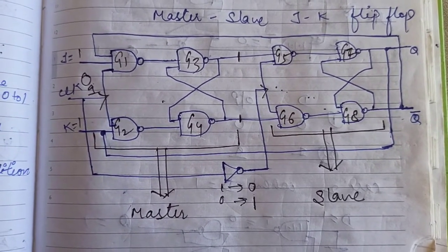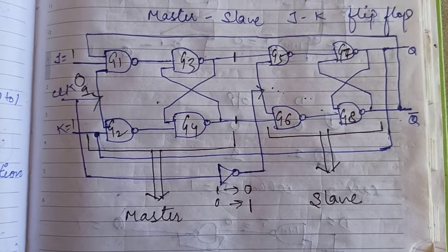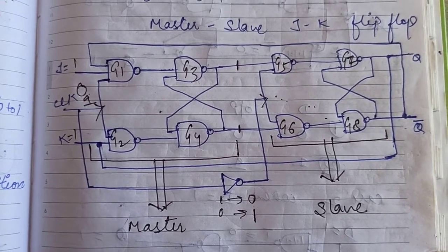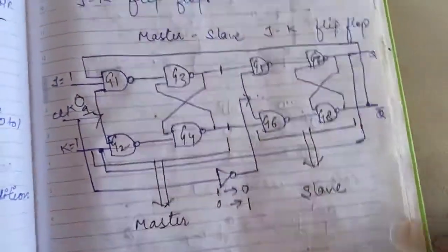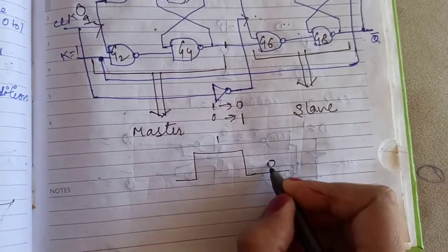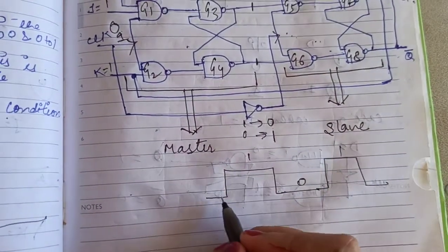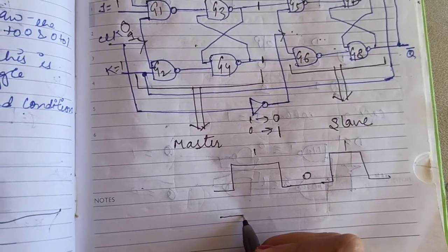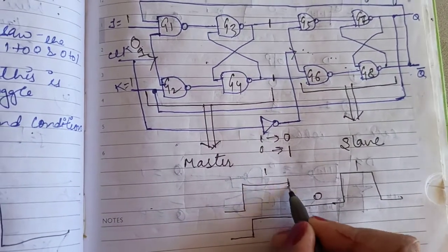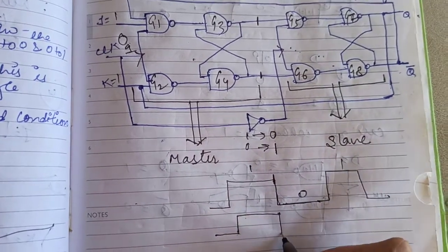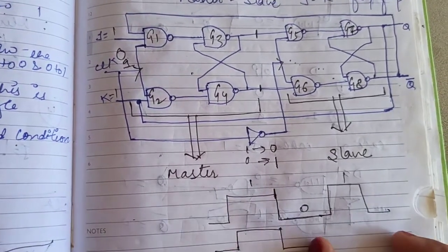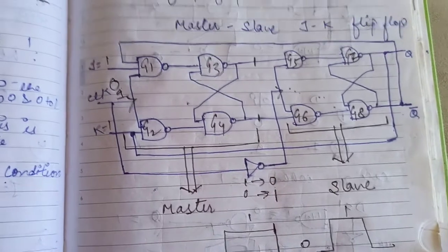When we give zero clock pulse to the master JK flip-flop, the master becomes inactive and the slave goes to the active state. You can see that when we give clock pulse 1, it will only produce one output until the clock pulse is 1. When the clock is zero, the output changes. So we can see that there is no toggle condition — the output only changes when the clock pulse changes.